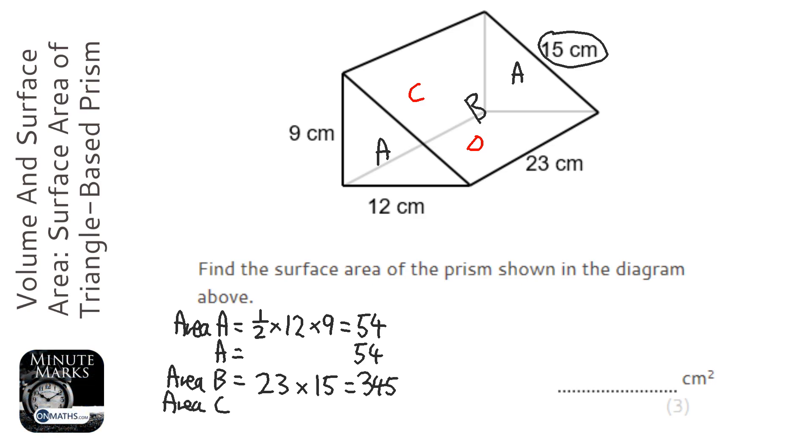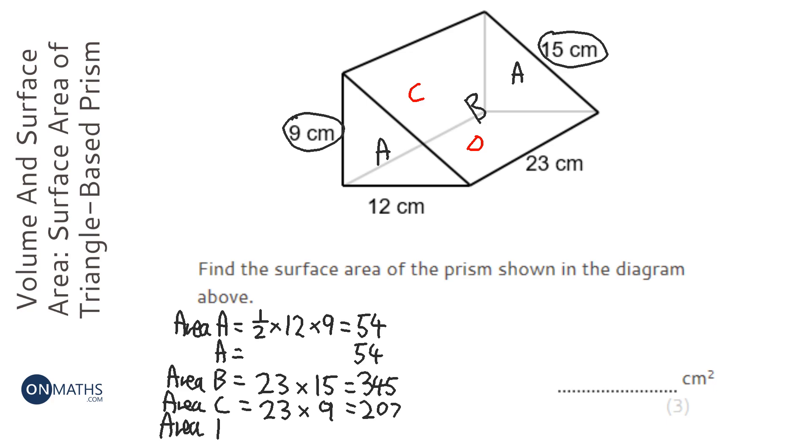Then area C. Now area C is going to be 23 wide, but this time I'm going to times it by 9 because it's the height of the rectangle there. So 23 times 9 is 207. And then area of D, which is the rectangle at the bottom. Again, it's going to be 23, but this time by 12, because there's 12 at the bottom. So 23 times 12 is 276.